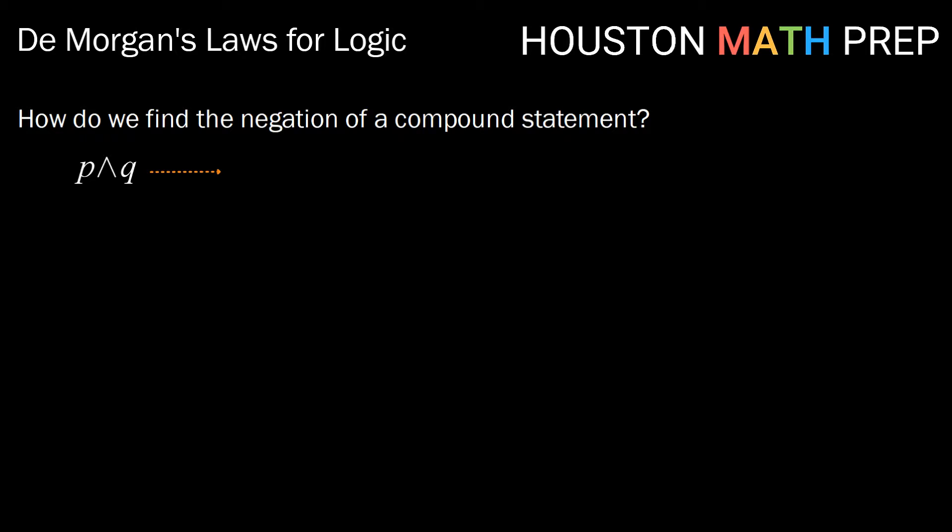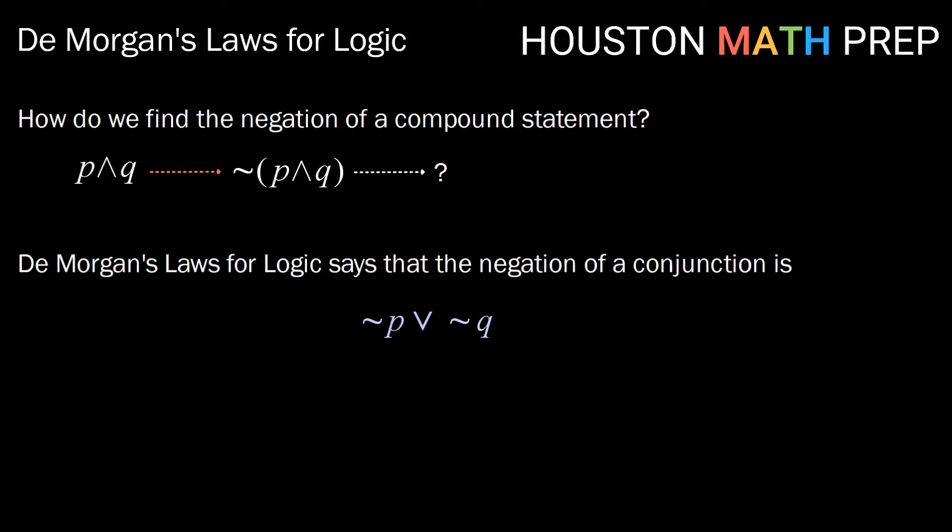How do we find the negation for P and Q? We would think of that as not P and Q. De Morgan's Laws for Logic says that the negation of P and Q is not P or not Q.